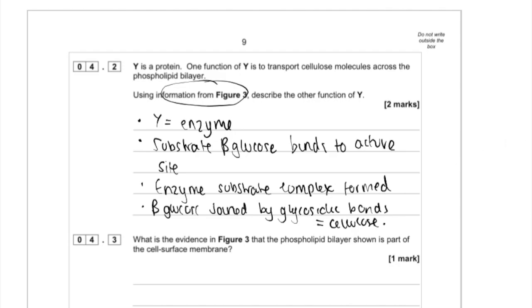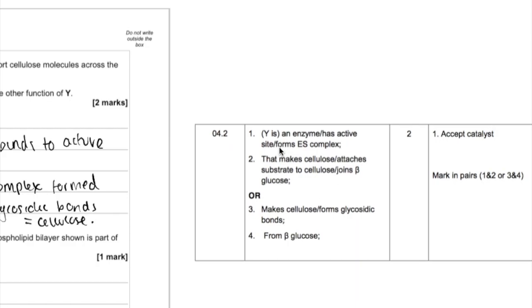So if we have a look at the mark scheme, there we go, we could have said it's an enzyme that makes cellulose or joins beta glucose, or you could have got the points like that.